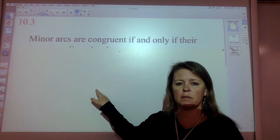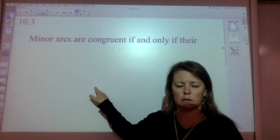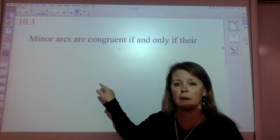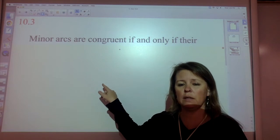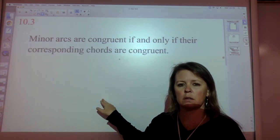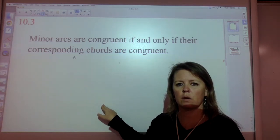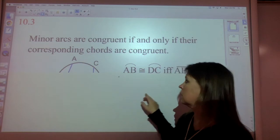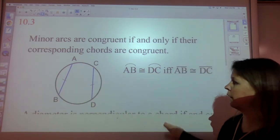Minor arcs, specifically, are congruent. Pause it and write this down if you have a packet. If and only if their corresponding chords are congruent. If and only if their corresponding chords are congruent. So in taking a look at that circle,